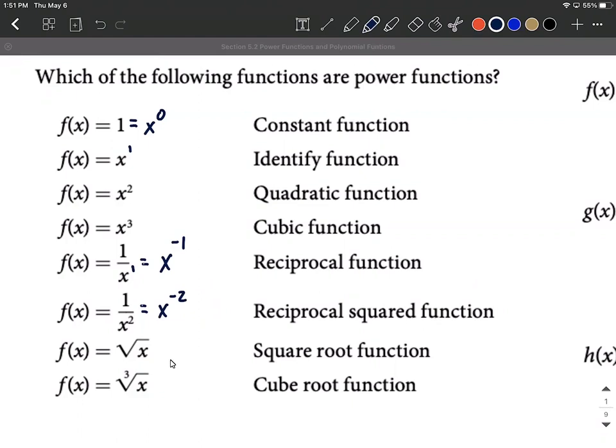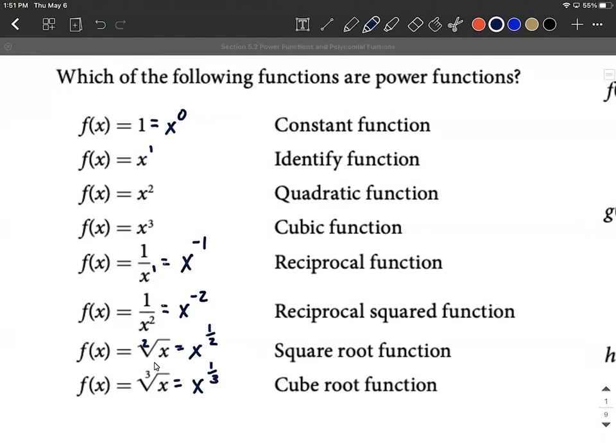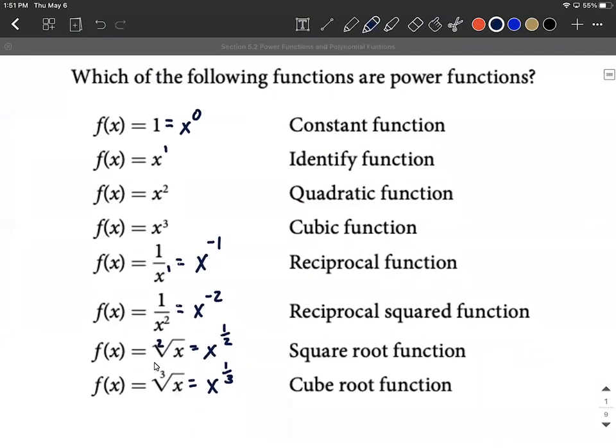Let's review exponent rules with root functions. The square root function has a two in the index for this radical and can be rewritten as x to the one-half power. Similarly, the cube root function is x to the one-third power. In general, if you have the nth root of x to the m, these can be rewritten as x to the m over n as a rational exponent.